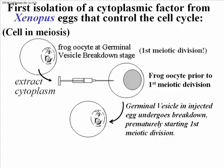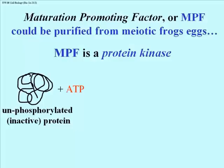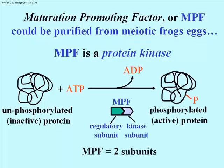Because this hypothetical factor initiated egg maturation, it was called the meiosis promoting factor, or MPF. MPF was easily purified from meiotic frogs' eggs, and shown to be, of all things, a protein kinase made up of two polypeptide subunits.